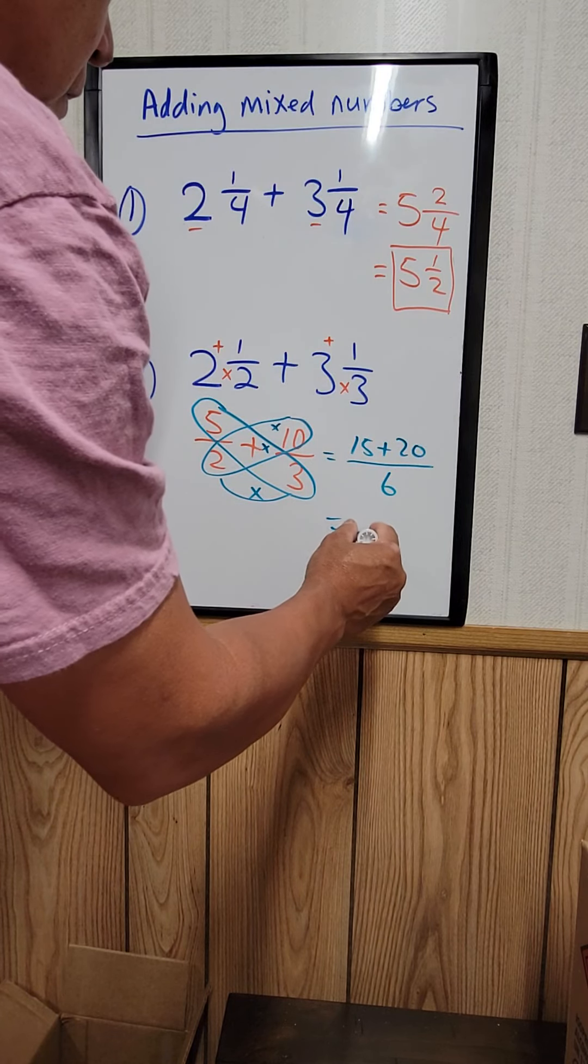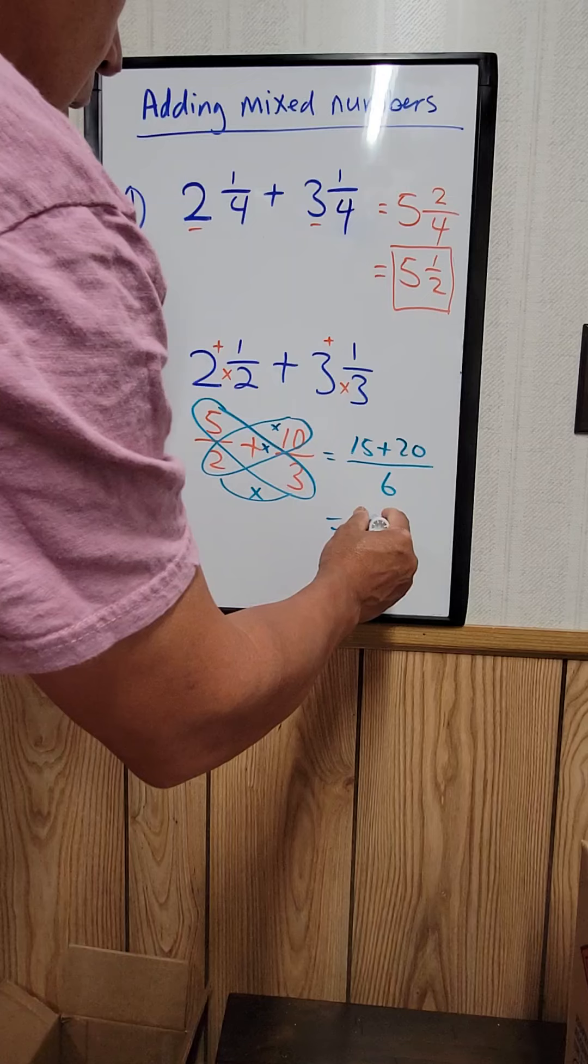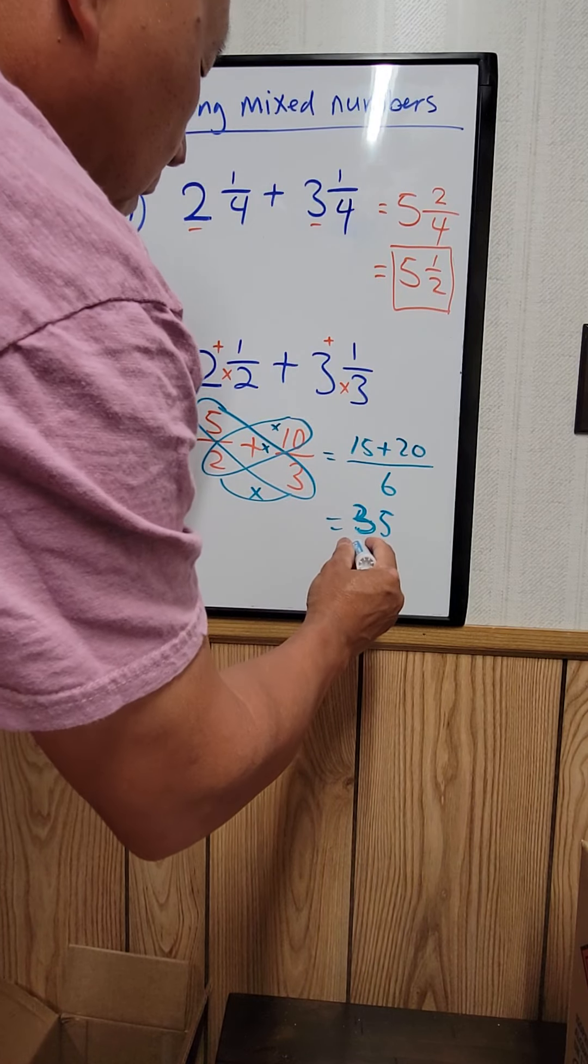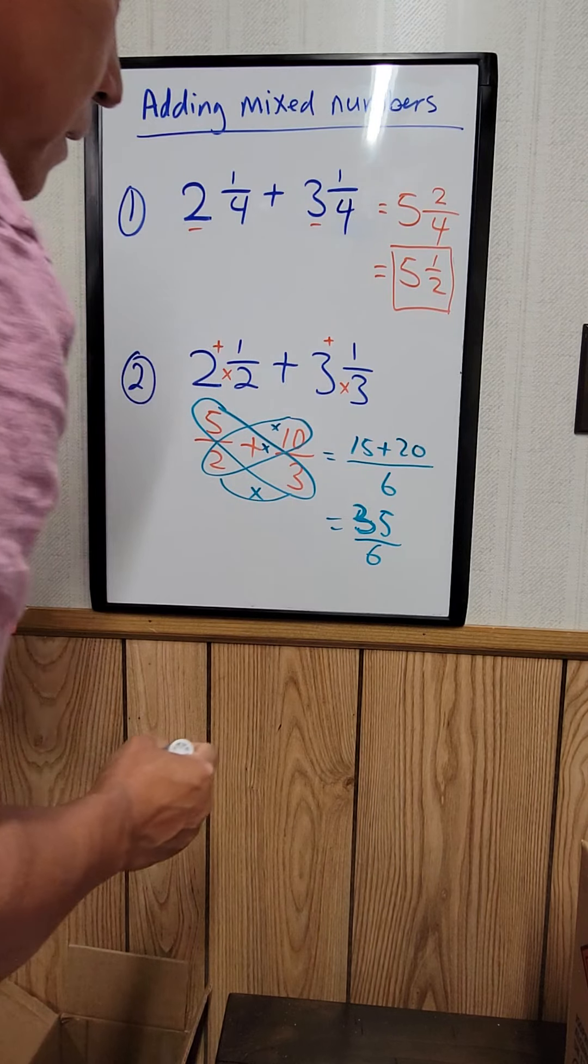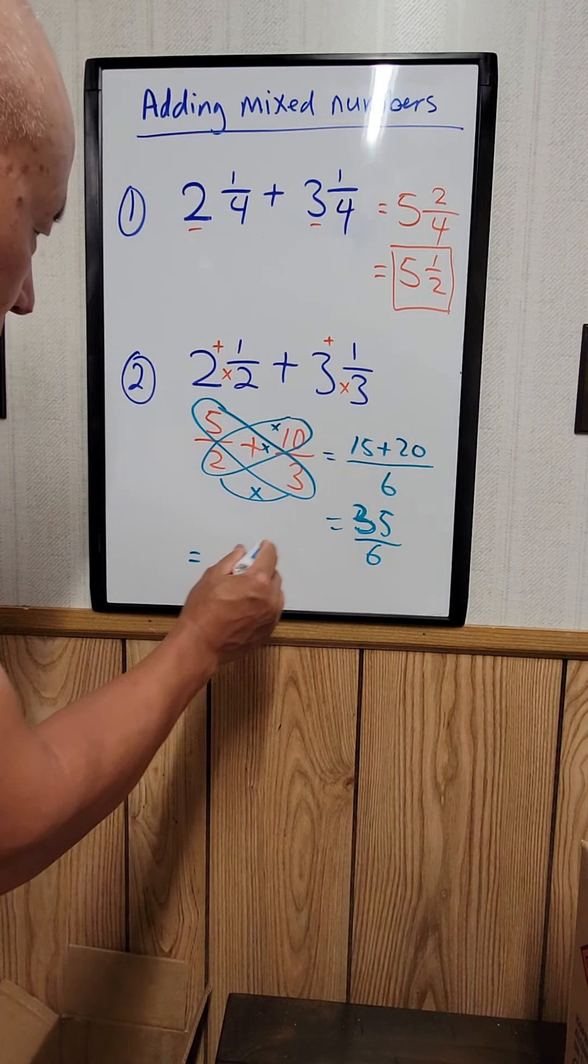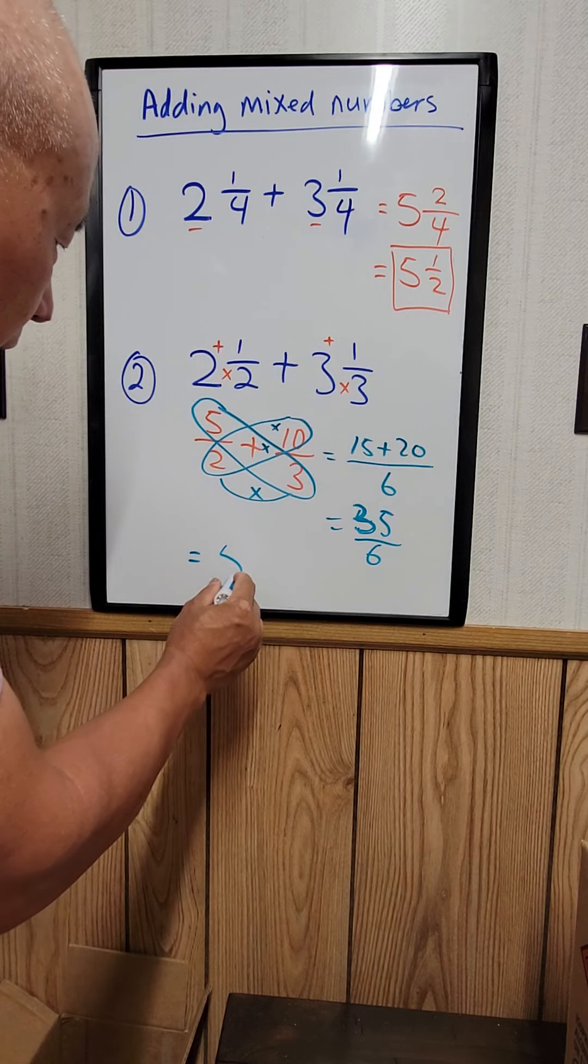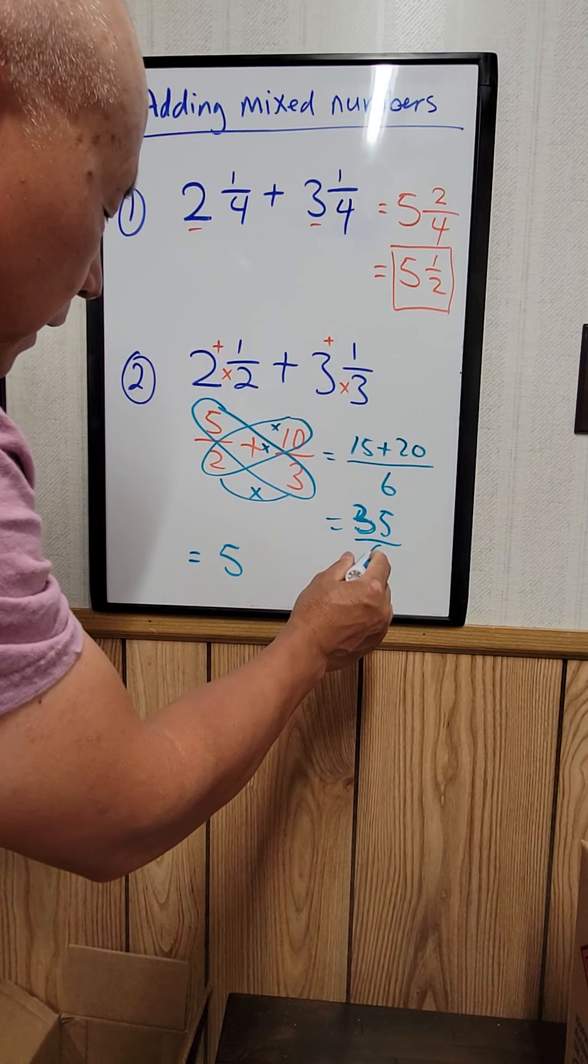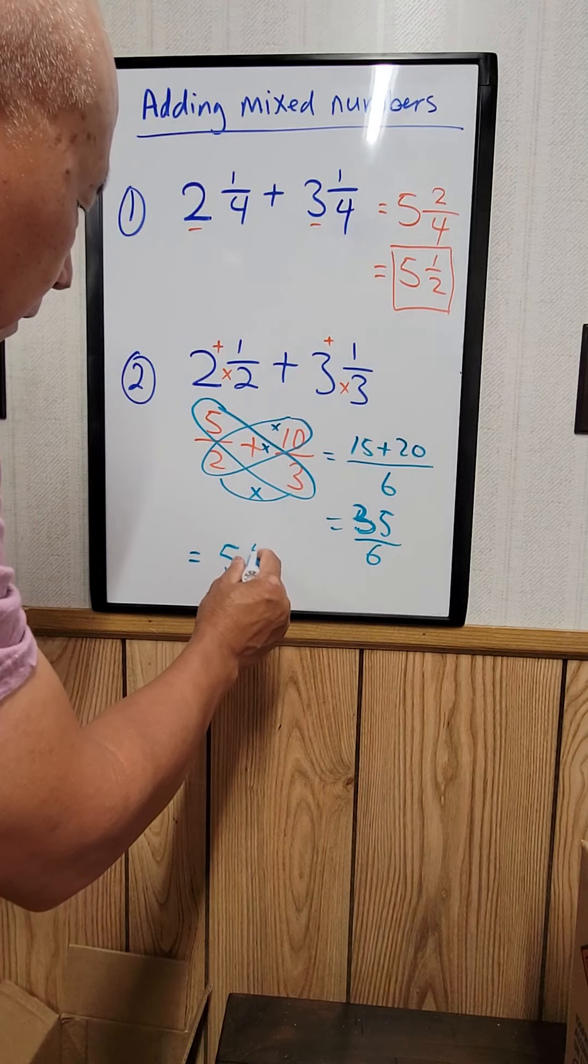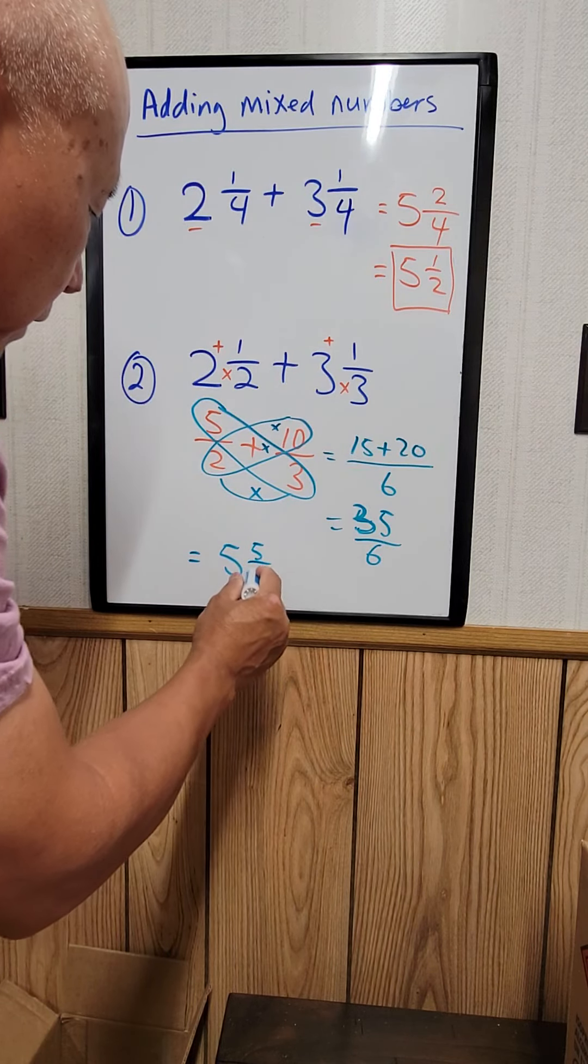So 15 plus 20 is equal to 35. 35 over 6, and you can convert that into a mixed number, so it equals 5 and 5/6. That's your answer.